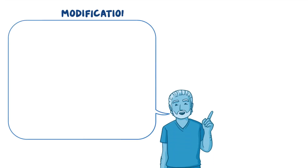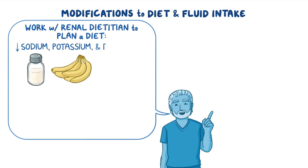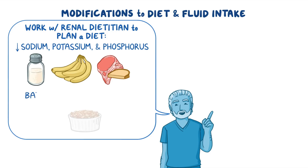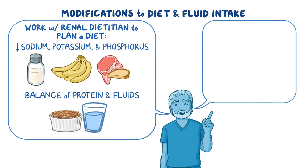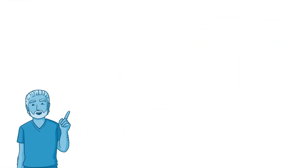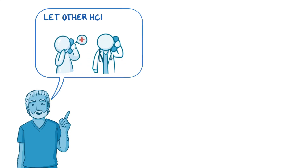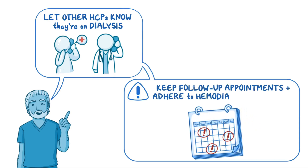Also talk to them about the modifications they will need to make to their diet and fluid intake. Ensure they work closely with the renal dietician to plan a diet that is low in sodium, potassium, and phosphorus, as well as the right balance of protein and fluids. Emphasize the importance of taking their prescribed vitamin and mineral supplements. Finally, remind them to let all of their other healthcare providers know that they are on dialysis, and stress the importance of keeping all follow-up appointments and adhering to their hemodialysis schedule.